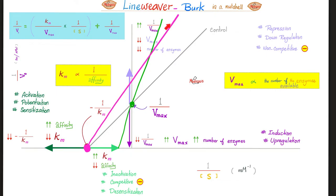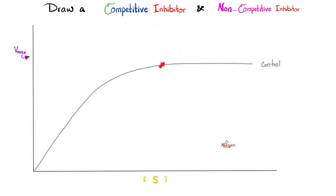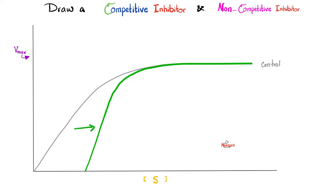For the non-competitive inhibitor on the Lineweaver-Burk, Km does not change, so the line starts from the same x-intercept. But Vmax goes down, which means 1/Vmax goes up, shifting the y-intercept upward. The non-competitive inhibitor and the control intersect on the x-axis. On the Michaelis-Menten plot, the competitive inhibitor shows Km going up but Vmax unchanged; the non-competitive inhibitor shows Vmax decreasing while Km stays the same.